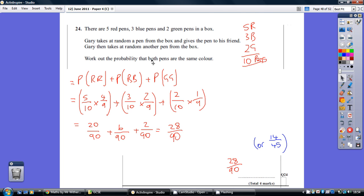We're being asked to work out the probability that both pens are the same colour, so that could either be red-red, or blue-blue, or green-green. So taking each of those in turn,